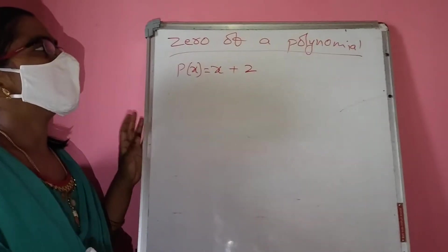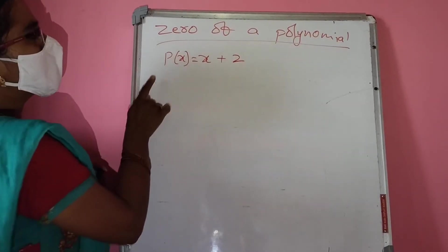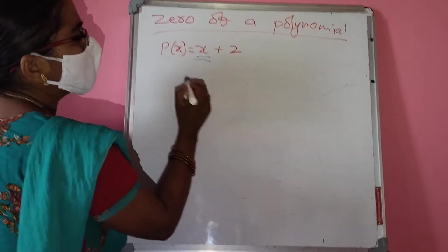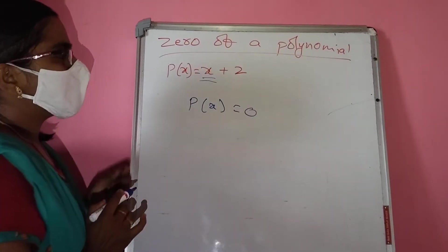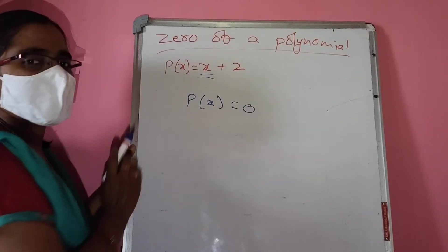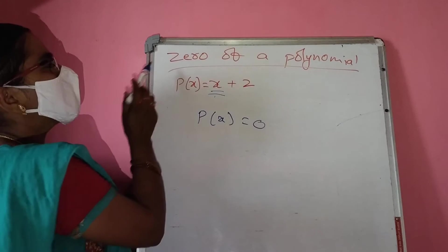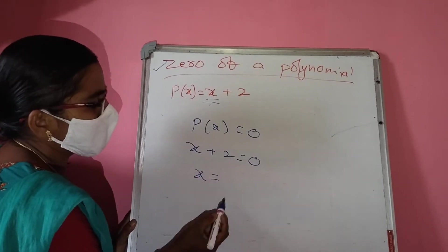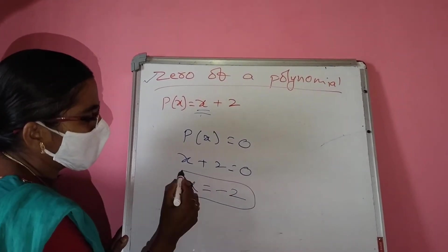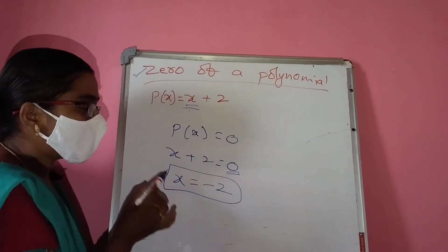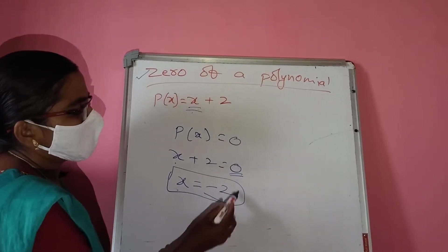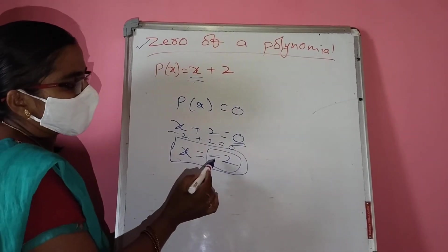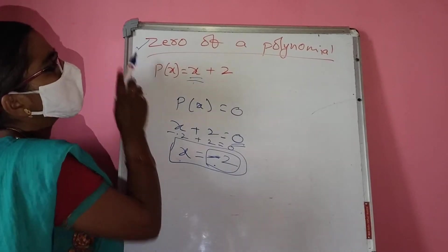Zero of a polynomial — simply we can say it is a solution. For example, polynomial p(x) = x + 2. By substituting which value of x will we get p(x) = 0? Solving x + 2 = 0 gives x = minus 2. So when x equals minus 2 we get 0, meaning x = minus 2 is the zero of this polynomial.